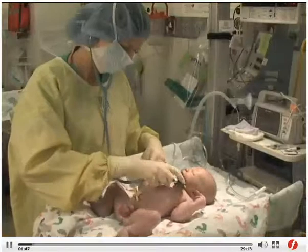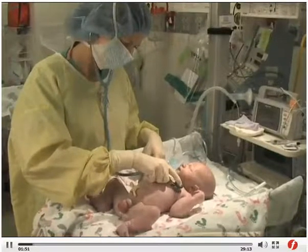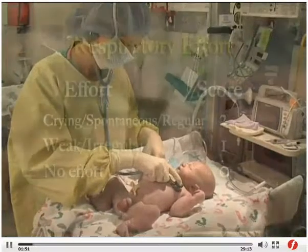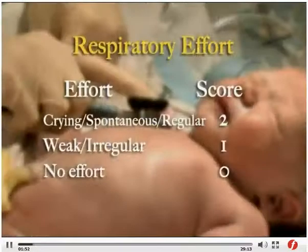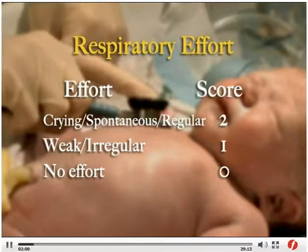Assess respiratory effort by observing respirations and auscultating the chest. Give a score of two if the infant is crying vigorously or if the respirations are spontaneous and regular. One if the effort is weak or irregular, and zero if there is no effort.